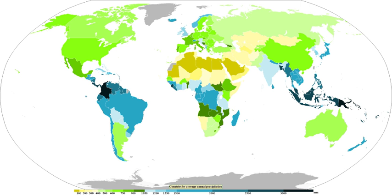Most precipitation occurs within the tropics and is caused by convection. The movement of the monsoon trough, or intertropical convergence zone, brings rainy seasons to savanna climates. Precipitation is a major component of the water cycle and is responsible for depositing fresh water on the planet. Approximately 505,000 km³ of water falls as precipitation each year: 398,000 km³ over the oceans and 107,000 km³ over land. The globally averaged annual precipitation is 990 mm, but over land it is only 715 mm.